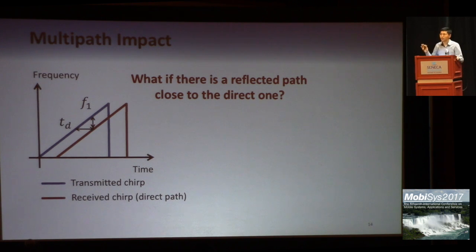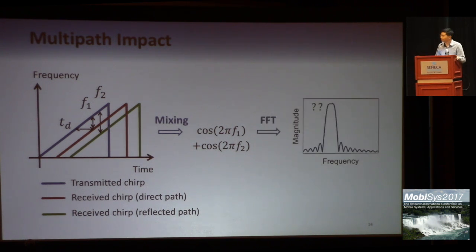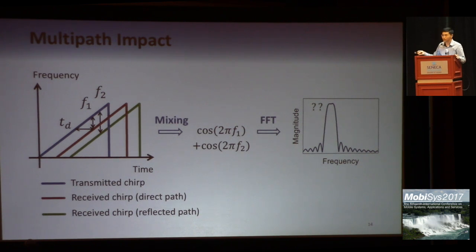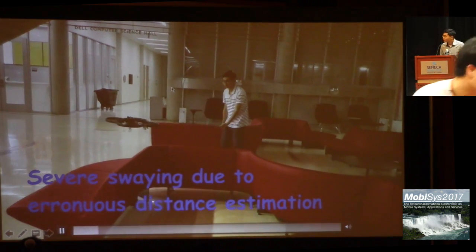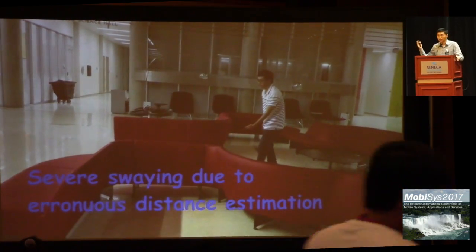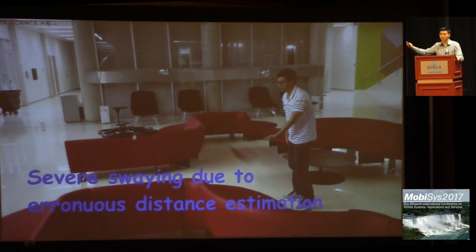However, when there is a reflected path close to the direct one, we will receive another copy of the chirp and get an extra component in the mixed signals. When we apply FFT on these signals, we may find peaks corresponding to two frequencies, F1 and F2, that may merge together, as shown in the figure. In this case, we cannot accurately determine F1 and hence the propagation distance. This means the measured distance is erroneous, which leads to wrong control behavior and makes the following distance significantly fluctuate.